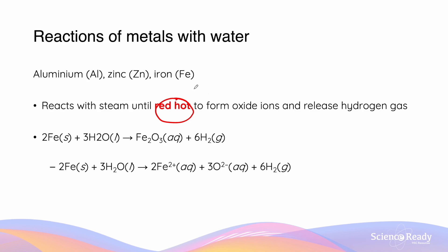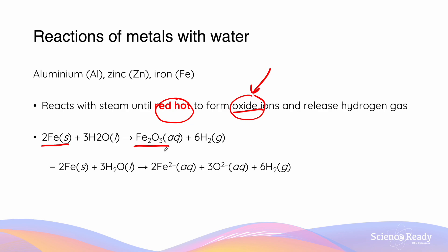This is similar to the comparison between magnesium and calcium, where magnesium requires hot water to react in order to overcome its higher first ionisation energy. These metals form oxide ions instead of hydroxide ions because the oxide layer they produce is much more stable. Whereas for a reactive metal, they will first form an oxide, but those oxides act as intermediates in a further reaction where they turn into hydroxides. The example of iron reacting with steam until red hot will form iron oxide.